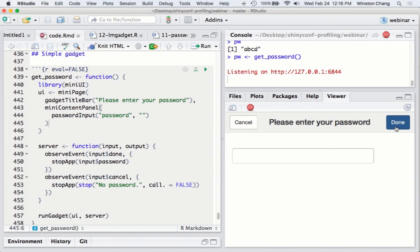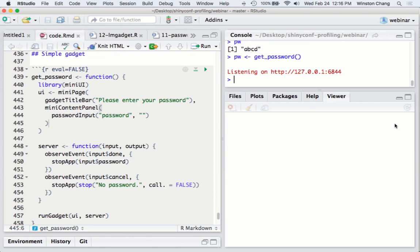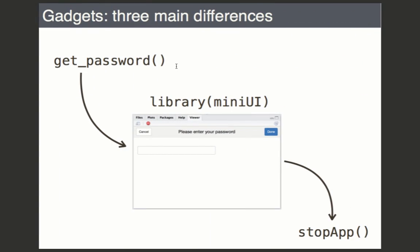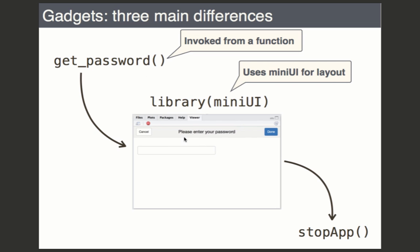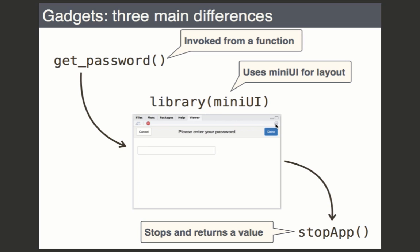That's what a Shiny gadget is — it runs in this little viewer window in RStudio. If you're not using RStudio it'll pop up in a web browser but with the same functionality. It's a nice little interactive tool that uses Shiny, but it's not meant for deployment. You wouldn't deploy this on a website using Shiny Server or shinyapps.io, and you don't want people to click Done and have the app exit, as that would just kill your app on the server.